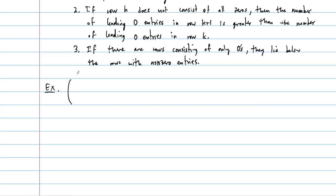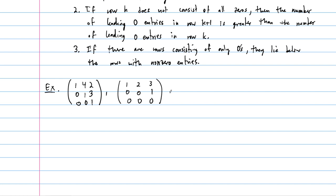REF can take several forms. It could look like the standard cascading ones along the diagonal with zeros below; or a row could skip a column, having two leading zeros before its first non-zero entry; and if there are all-zero rows, they go at the bottom. All of these qualify as row echelon form.